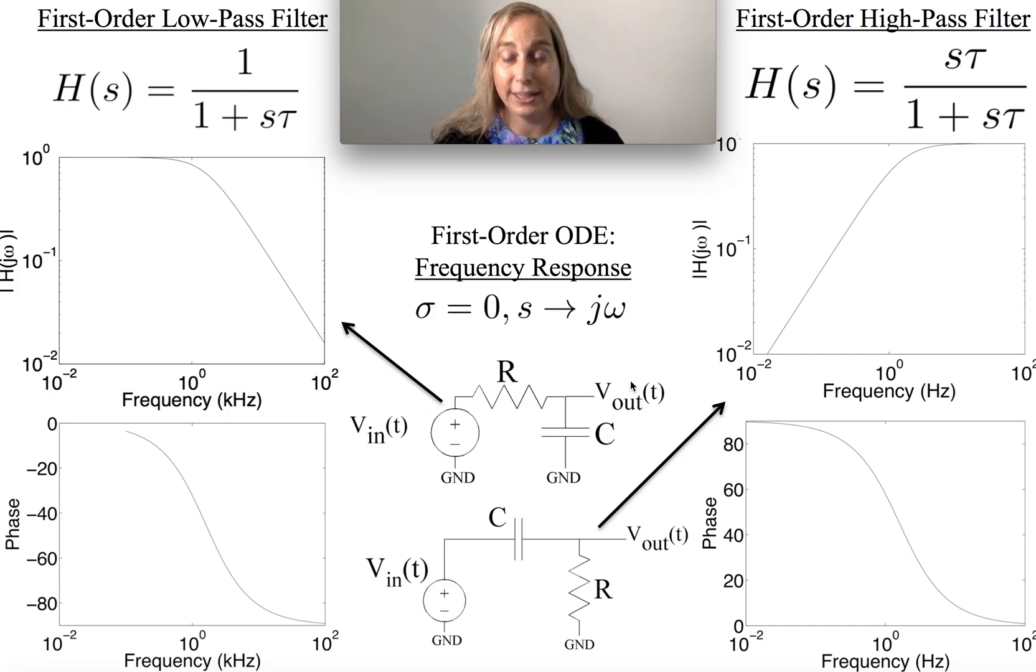They might be structures you would see like a low-pass filter here with an R and a C, or the high-pass structure with the C and the R. And there's also resistor and inductor versions of both of these circuits. And you can kind of see the structure.